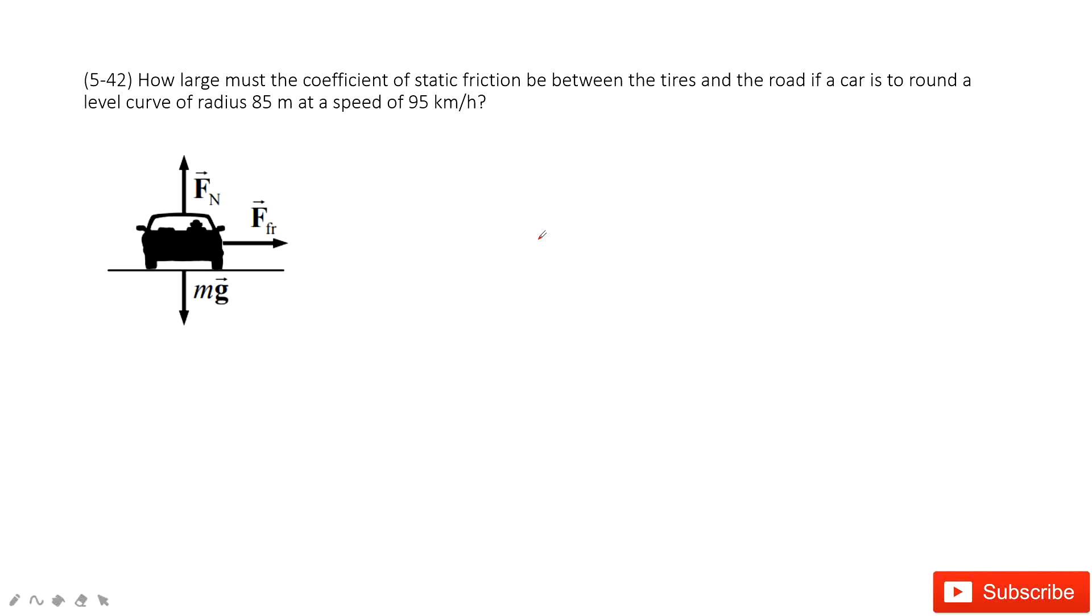This is circular motion. As we can see, for the car on the ground, we have the gravity and the normal force. And because this car does circular motion, there must be a force pointing to the center, that is called the central force.